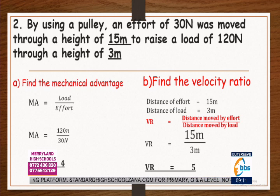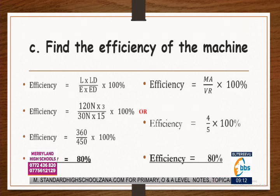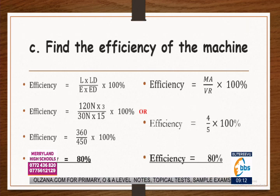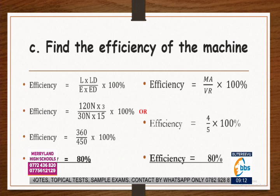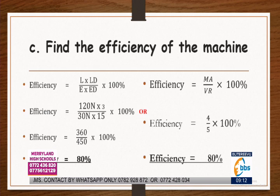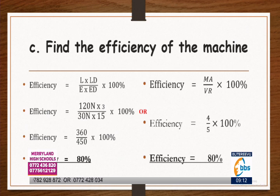Let's move to part C — the efficiency. Using the same formula: efficiency equals mechanical advantage divided by velocity ratio, multiplied by 100%. We already have the mechanical advantage and the velocity ratio, so working through that gives you 80%.